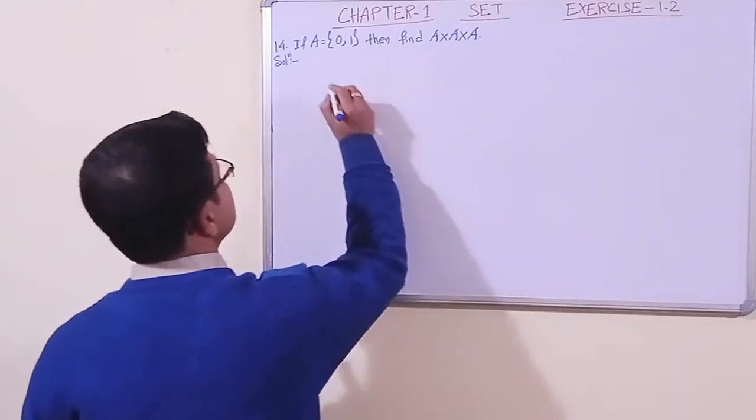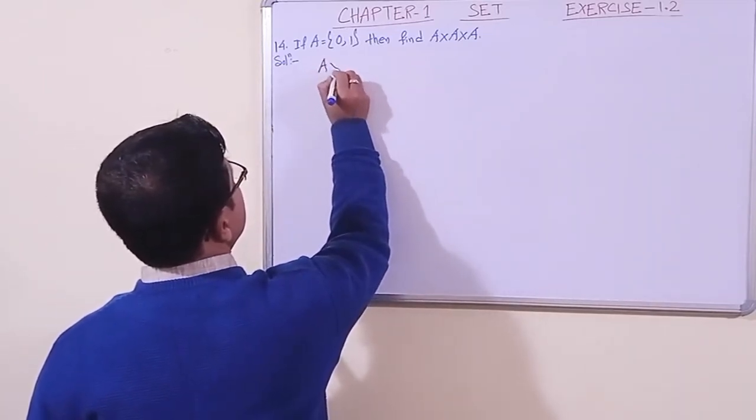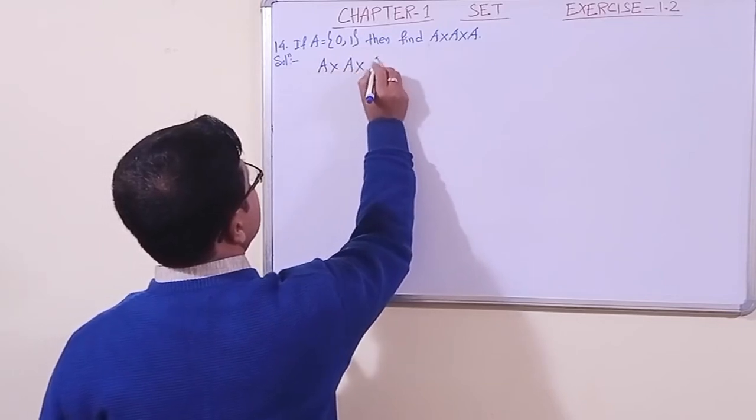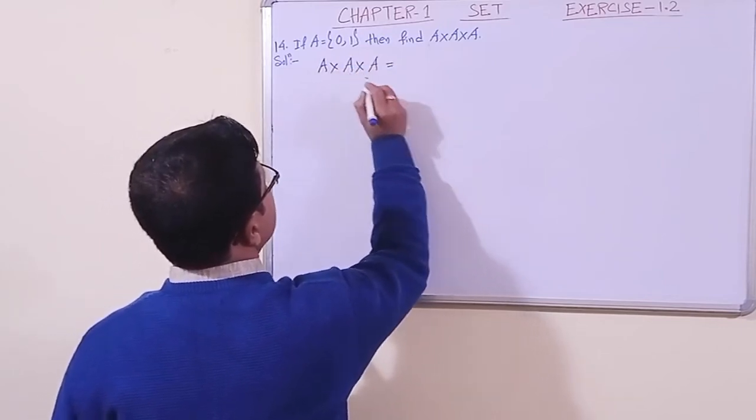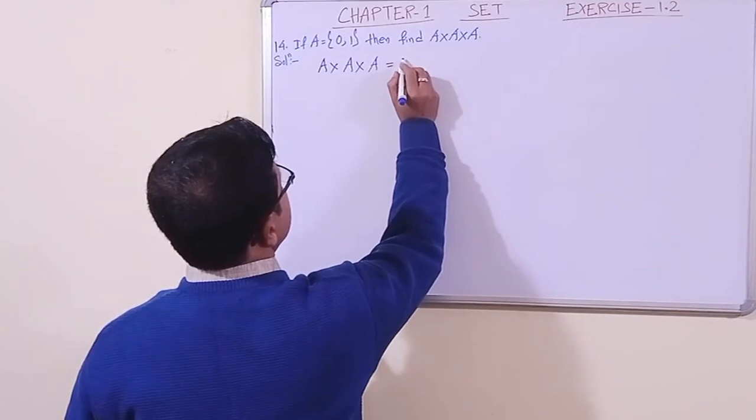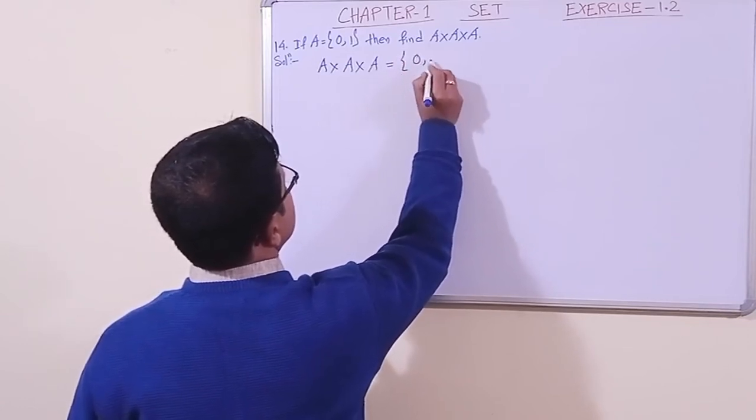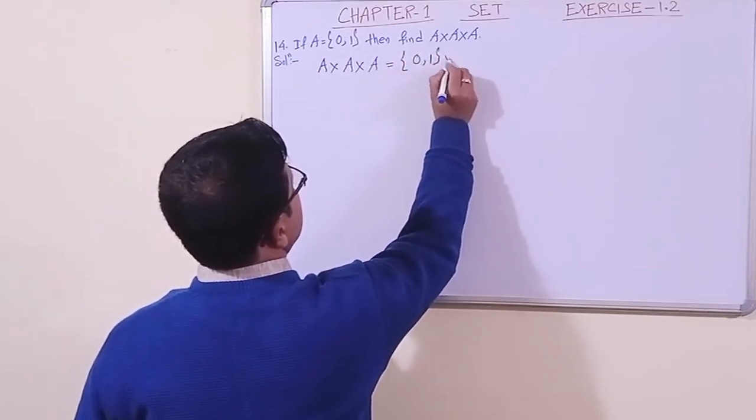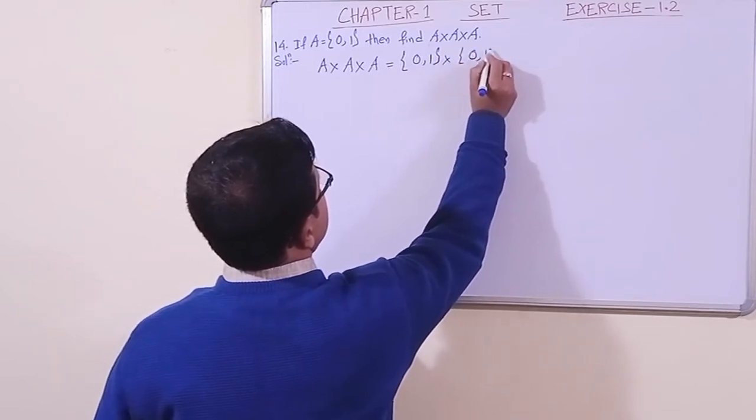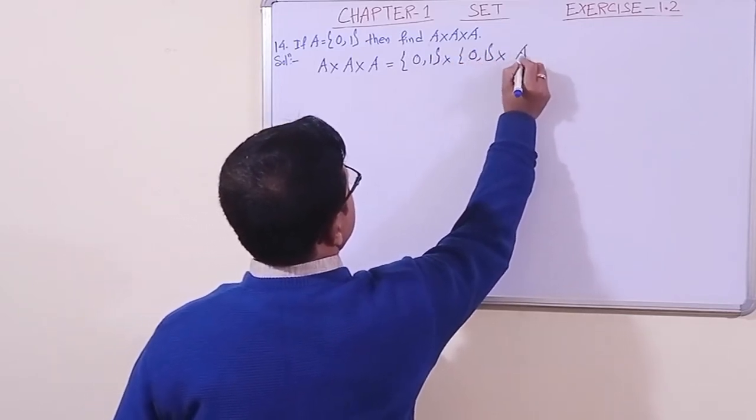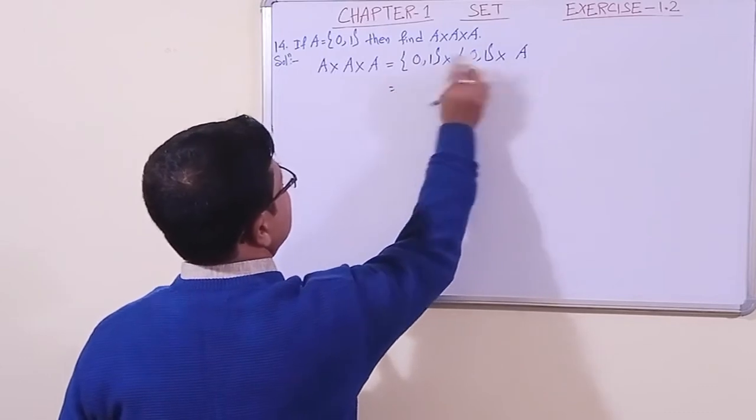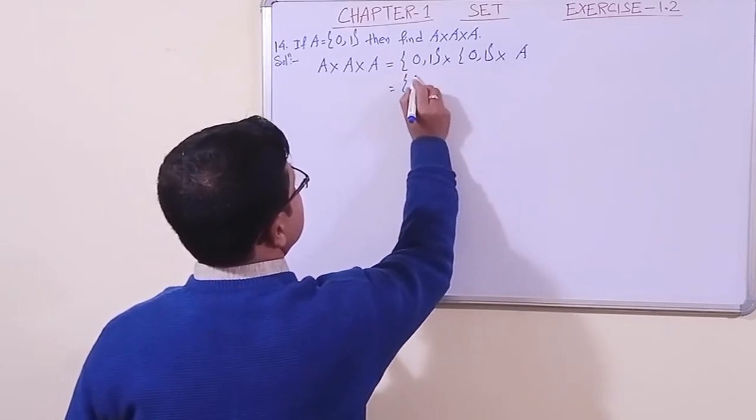The solution is quite simple. You can see here A cross A cross A we have to find. We can write A cross A like this: 0, 1 cross 0, 1. Let it be A. Now let us find the Cartesian product.